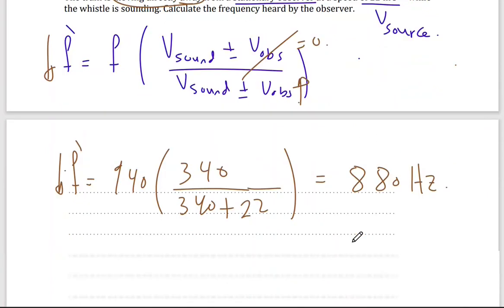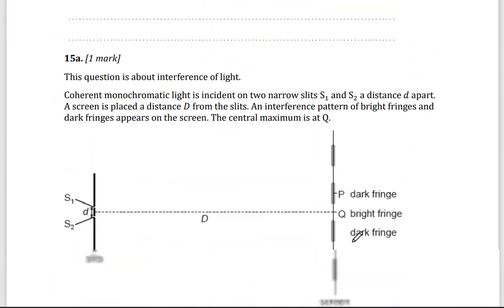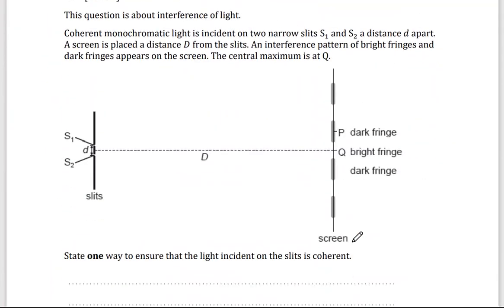Second question, it's on the interference of light. Okay, so here we have a coherent monochromatic light. Monochromatic means we're using one color with the same frequency, same phase, same amplitude, same wavelength. So it's incident on two narrow slits, two narrow slits, S1 and S2.